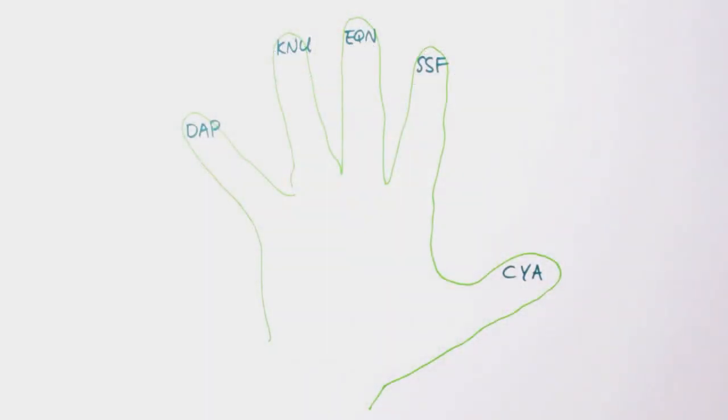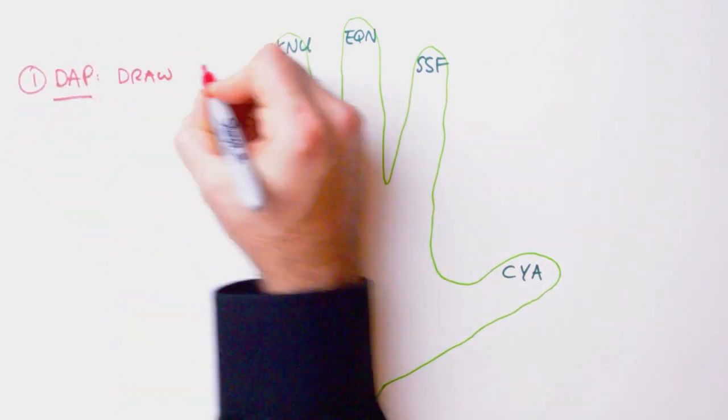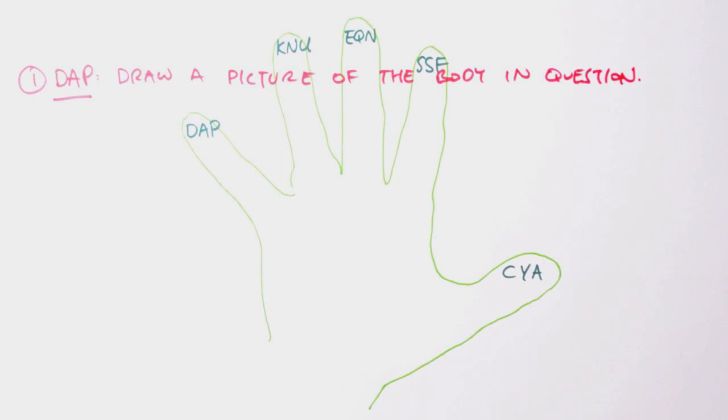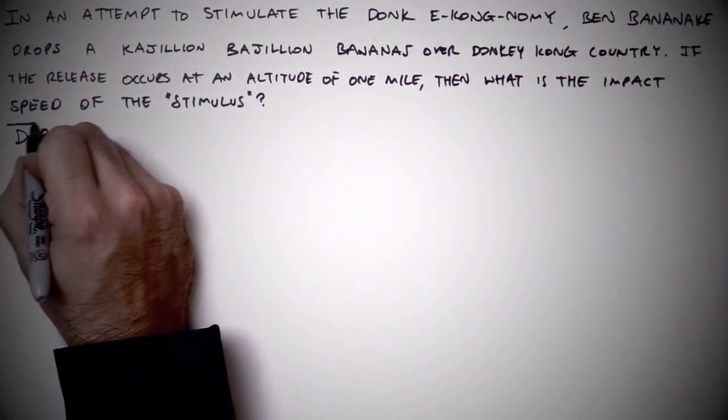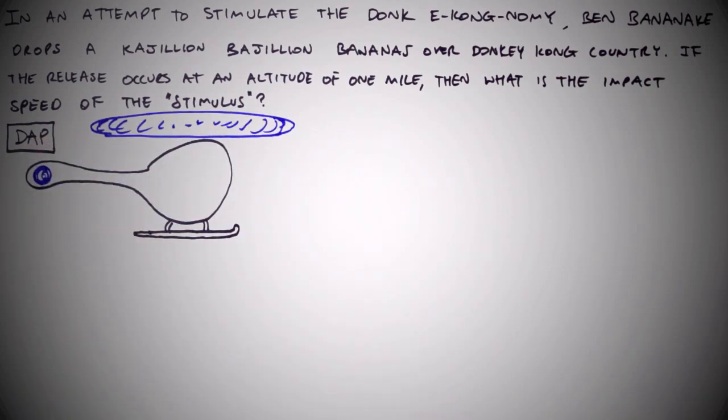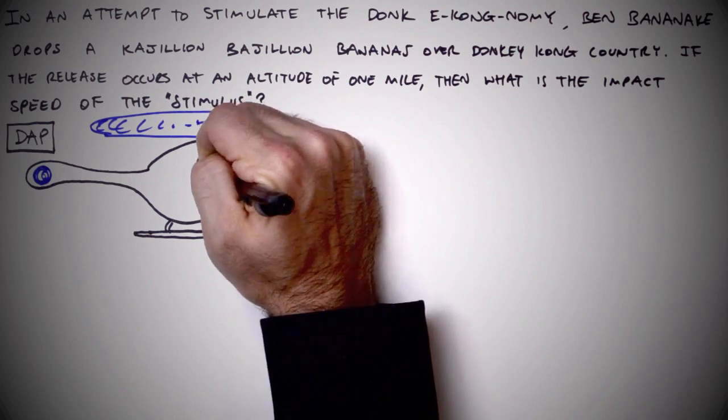Alright, first official step. Draw a picture of the body or bodies in question. Even if our artistic sensibilities have stagnated since second grade, we still need to draw a picture in order to visualize the situation. Be sure to include the surrounding environment in the picture, noting any motion that's occurring.